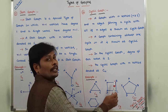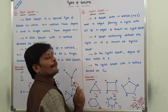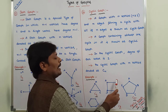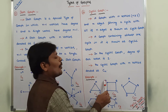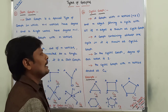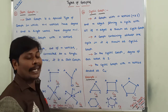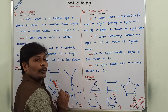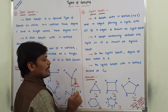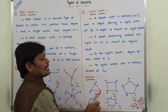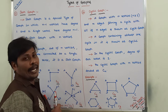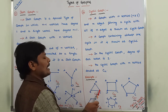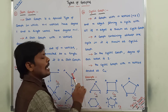This graph consists of 4 vertices A, B, C, D and 4 edges: A to B, B to C, C to D, D to A. These 4 edges form a cycle, so it is called a cyclic graph. For n equals 3, vertices A, B, C with edges A to B, B to C, and C to A form a cycle, giving a cyclic graph with 3 vertices and 3 edges.